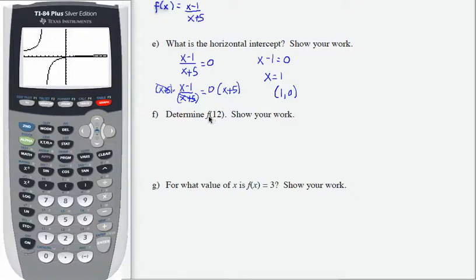Now to determine f of 12, that's asking me if my input is 12, find the output. So I'm going to replace x with 12, so 12 minus 1 over 12 plus 5. I get 11 over 17. That gives me the ordered pair 12 comma 11 over 17, or if I want to write that as a decimal, 0.65.